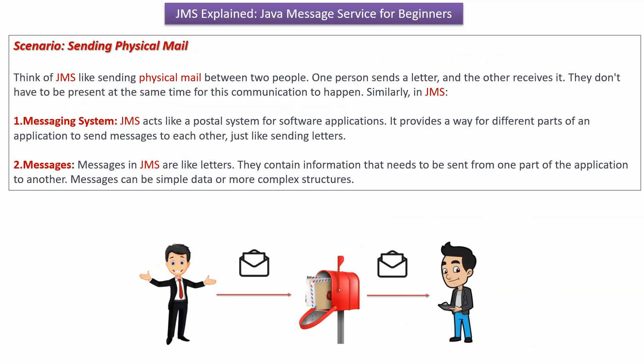We can think of JMS like sending physical mail between two people. One person sends a letter and the other person receives it. They don't have to be present at the same time for this communication to happen.